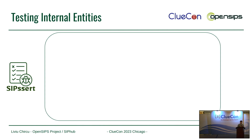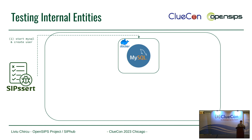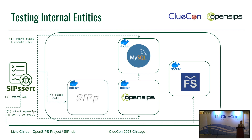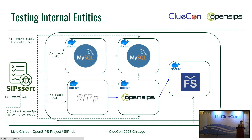Let me show you a bit of usage with SIPssert. Here we have a MySQL Docker container that we fire up, and then the OpenSIPs container starts - of course it is dependent on the MySQL. It's a bit of an ordering problem we had to solve. Then the FreeSwitch container boots up, and finally we place a call from the fourth container. This one is a CP - the call gets established, and we can finally check how things went: what is the status of the database, what were the return codes, and were there any failures on the way.